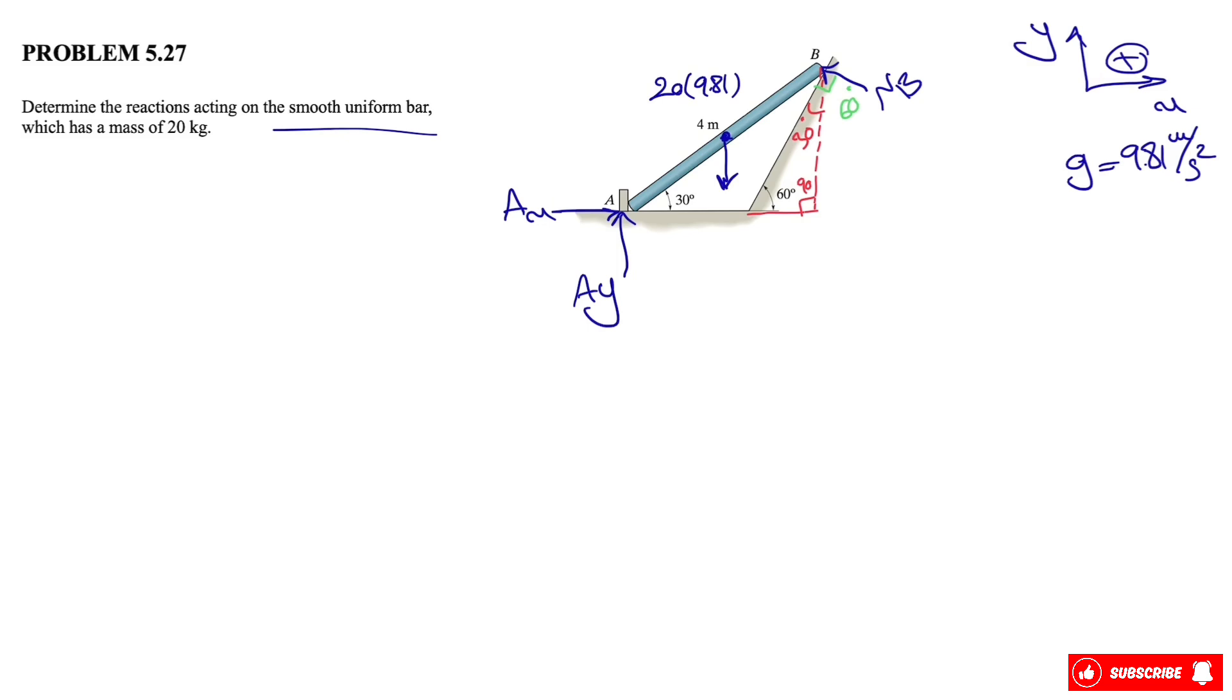Which means this part has to be 60 in order to get that right angle that I'm showing in green. There is one more angle that we need to figure out, and that would be the angle for the weight, which means if this angle is 30, this one has to be 30 degrees as well.